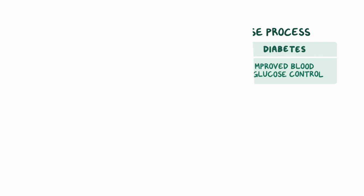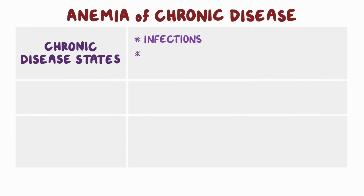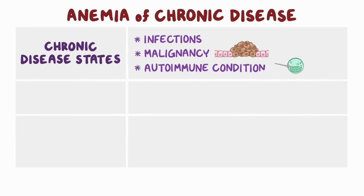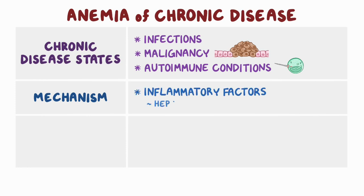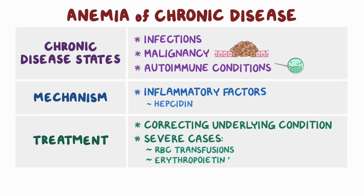As a quick recap, anemia of chronic disease occurs in the context of chronic disease states like infections, malignancy, diabetes, and autoimmune conditions. The mechanism of disease is largely mediated by inflammatory factors including hepcidin. Treatment involves correcting the underlying condition or, in severe cases, RBC transfusions or erythropoietin injections.